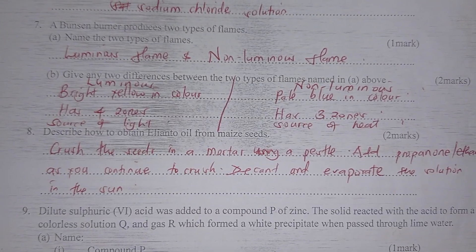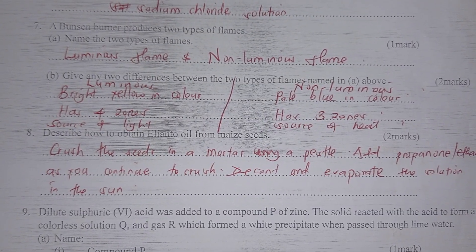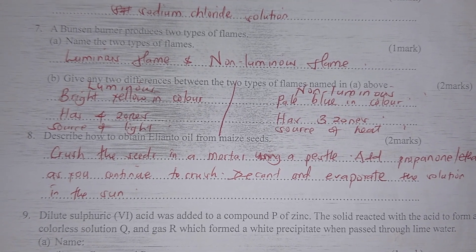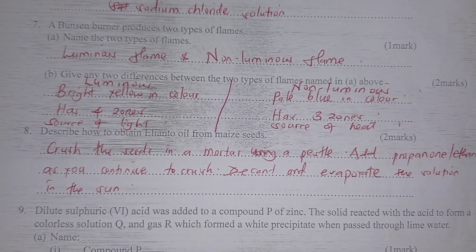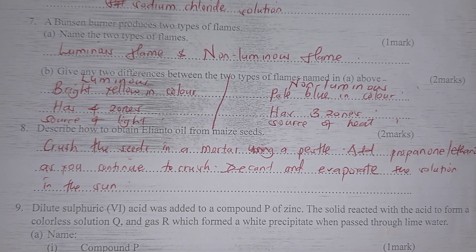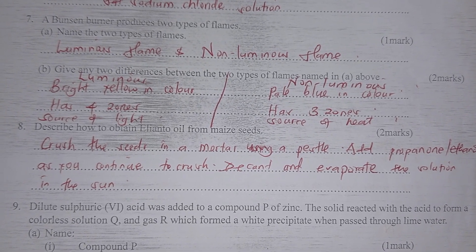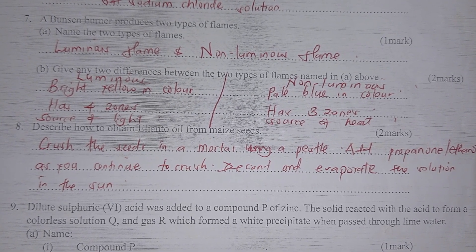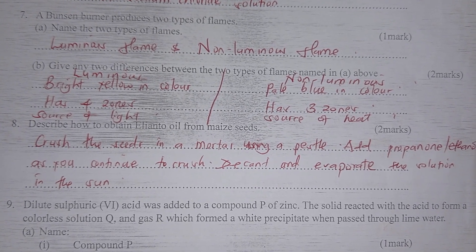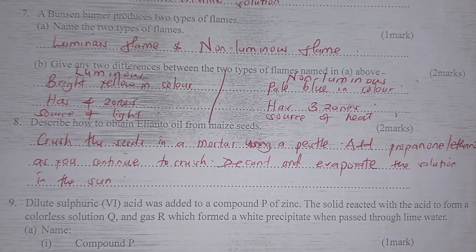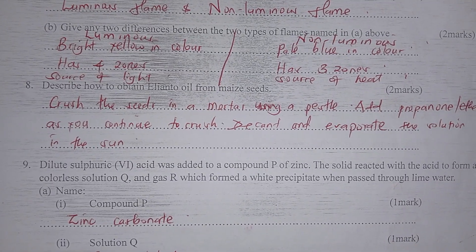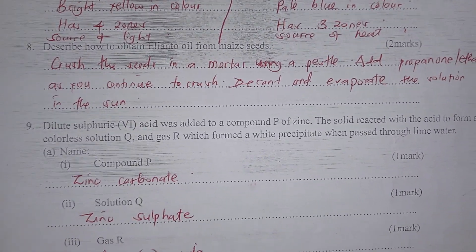A Bunsen burner produces two types of flame. They are a luminous flame and a non-luminous flame. Two differences between them: a luminous flame is bright yellow in color and a non-luminous is pale blue in color. A luminous flame has four zones and a non-luminous has three zones. A luminous flame is a source of light, while a non-luminous is a source of heat.